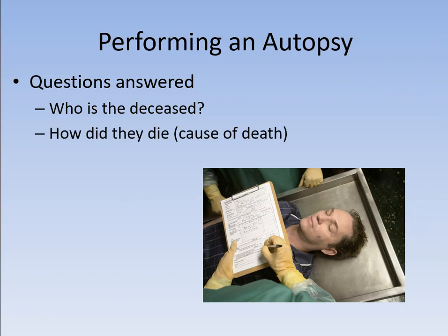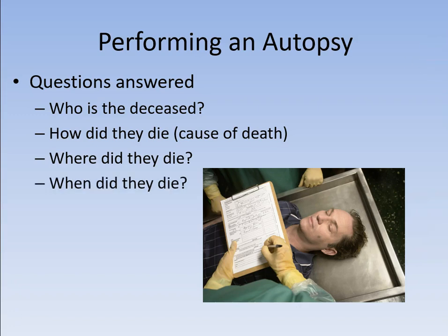Autopsies obviously answer how did they die — the cause of death. Also, the autopsy can help determine where they died based on some of the factors we've talked about: were they outside, were they inside, did they breathe in something, were they drowned in fresh water or salt water? And the autopsy can help determine when they died — the time of death — either through rigor, livor, and algor mortis, or by looking at biochemical markers of the vitreous humor to determine how long they've been dead.